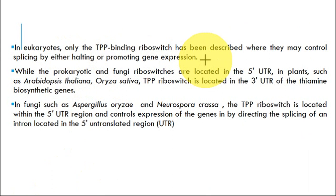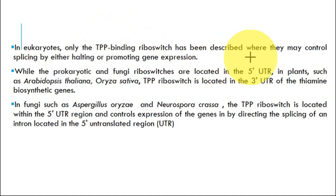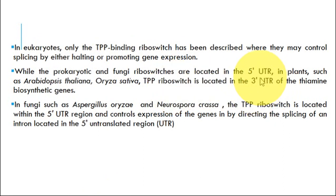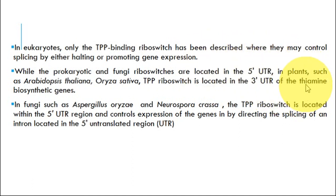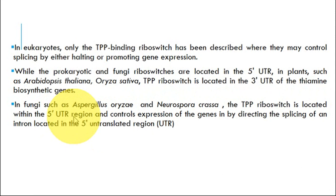In eukaryotes, the number of riboswitches reported is comparatively less than in prokaryotes. A TPP-binding riboswitch has been described where it may control splicing by either halting or promoting gene expression. In prokaryotes and fungi, riboswitches are usually present in the 5' untranslated region, whereas in plants, riboswitches are usually present in the 3' untranslated regions — this has been studied with respect to thiamine pyrophosphate. Examples of fungi include Aspergillus and Neurospora, where the thiamine pyrophosphate riboswitch is located in the 5' UTR and controls expression by directing splicing of an intron located in that 5' UTR.